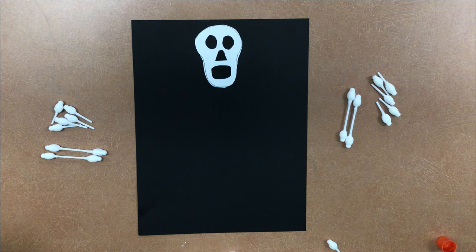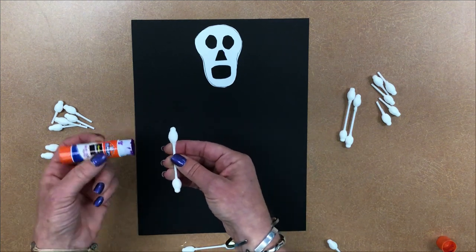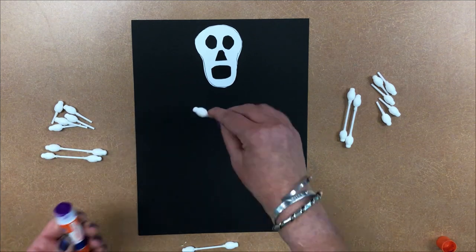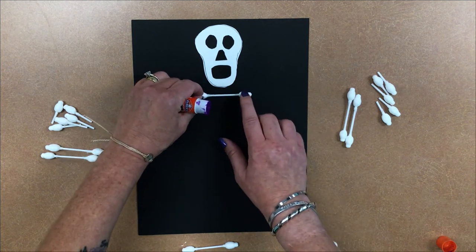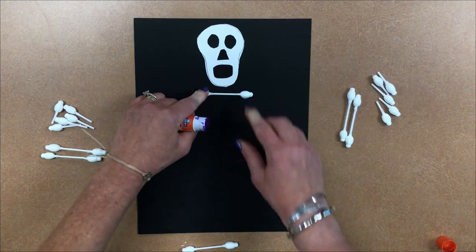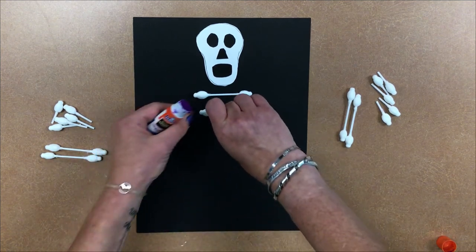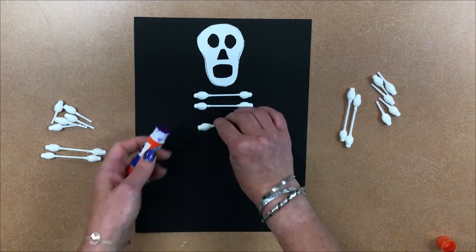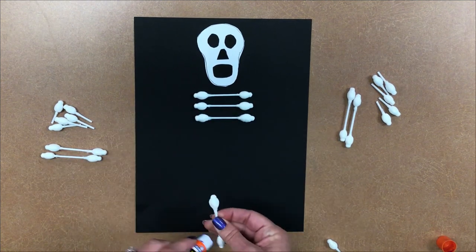Now this is the fun part, putting together the bones. The easiest way to do this, that I found, was to put the glue just on the Q-tip that's going to be touching the paper. You don't need to worry about the middle part. So you're going to do five chest bones, or ribs I guess they would be. Get those down and just press. And they'll stay.